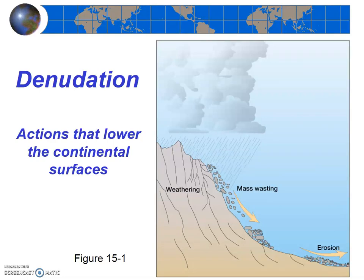As you remember from previously, denudation consists of three processes: weathering, mass wasting, and erosion. In general, we think of these processes as happening sequentially. Weathering breaks apart and decomposes the rock, mass wasting carries it down a slope, and erosional agents such as water, wind, and glacial ice carry it away. We just finished discussing weathering. Now let's move on to mass wasting.